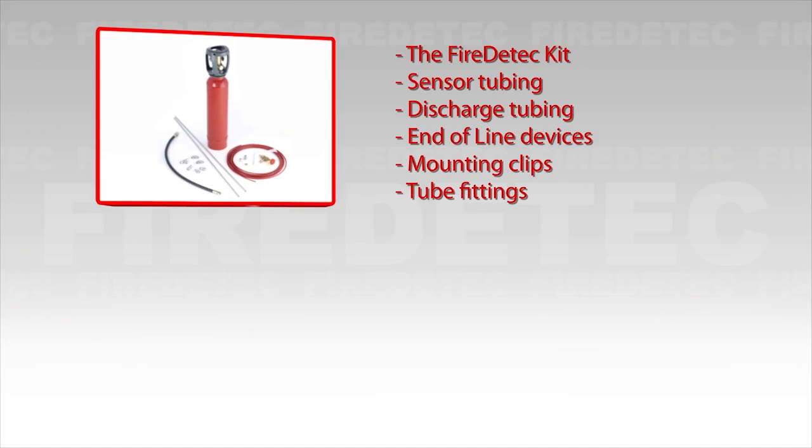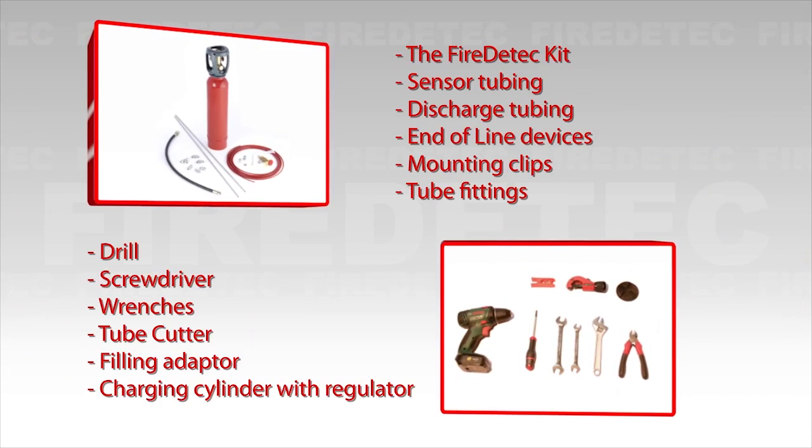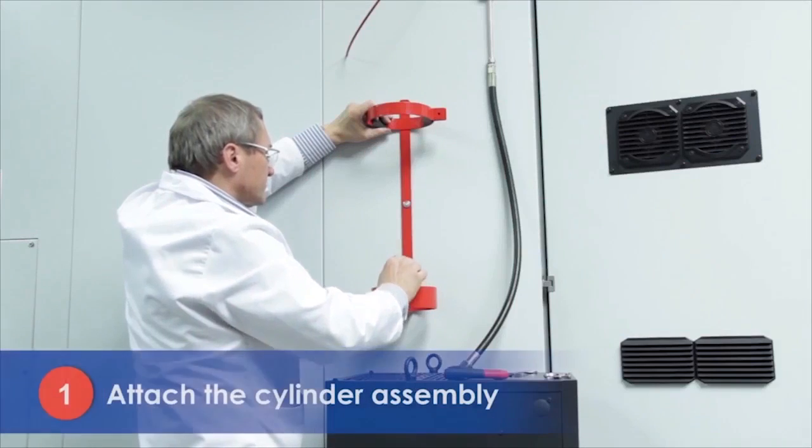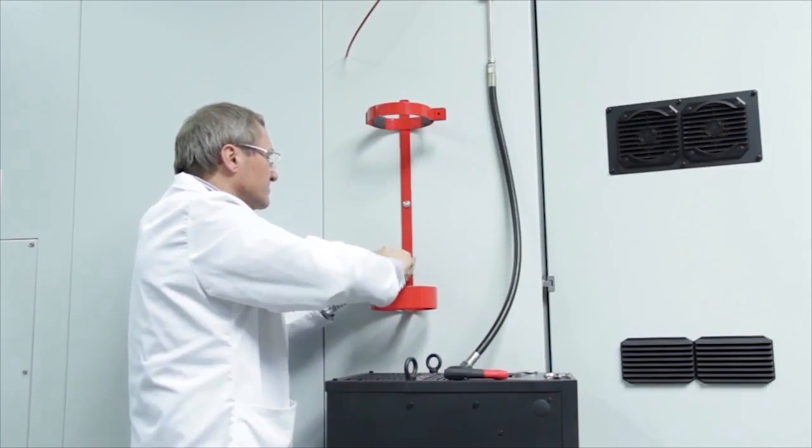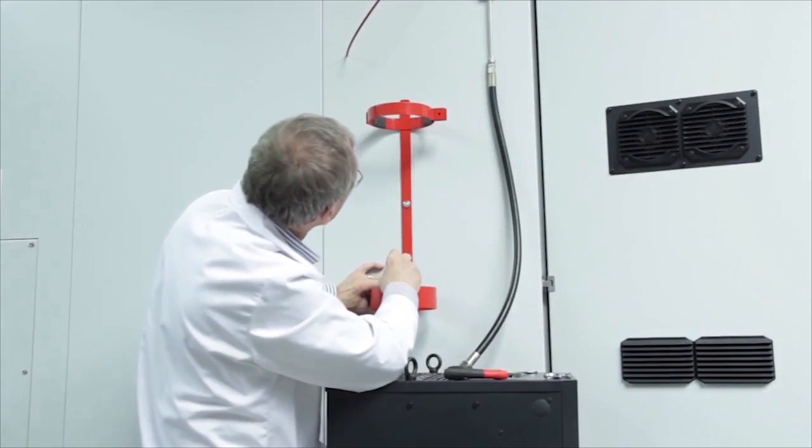Make sure you have the necessary tools for the installation, and be sure to turn off any electricity before you start. Begin by mounting the cylinder bracket between hip and eye level on either side of the electrical cabinet or on an immediately adjacent wall. Be sure the wall or panel is capable of holding at least 20 kilograms of weight.